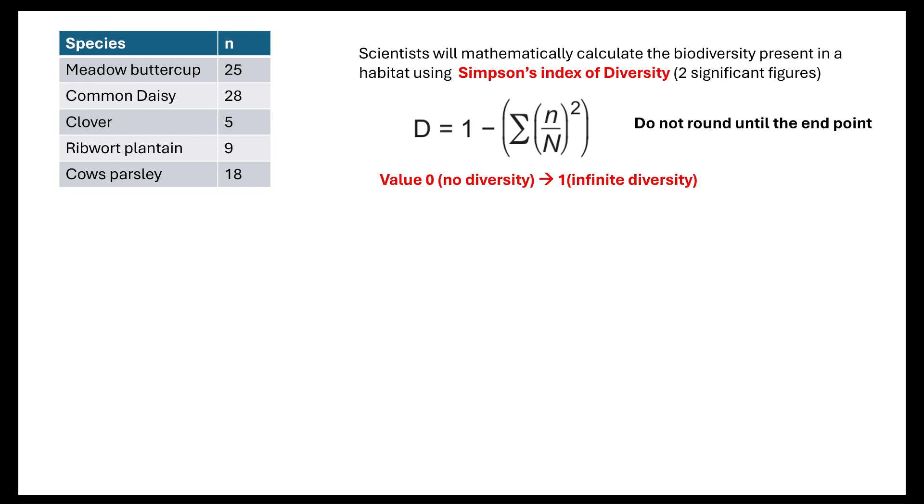The other thing they tend to go down the route of when it comes to sampling is looking at Simpson's index. Do go back and double check the video that I have done on module 4 and biodiversity. But just as a reminder, we know that scientists will mathematically calculate the biodiversity present in the habitat using Simpson's index of diversity. You will need to be able to use this. You'll be given the equation. But what's really important is that you understand that a value of zero means no diversity. The closer the value is to one, the higher the diversity.